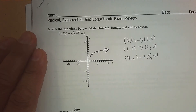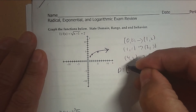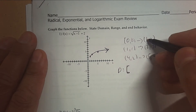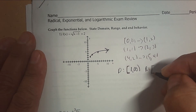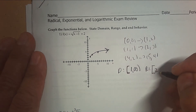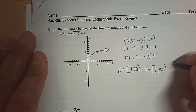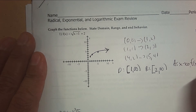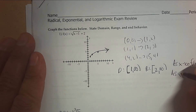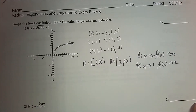Then it says the domain. The domain here starts at your h and k, so it's at 1. It starts at 1 and goes to infinity. Your range is your k — it starts at 2 and goes to infinity. And then the end behavior: as x approaches infinity, the function approaches infinity. But the other end behavior uses h and k, so as x approaches 1, the function approaches 2.